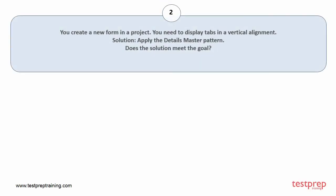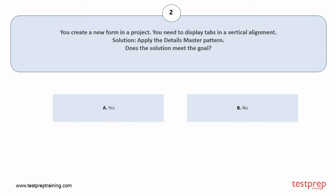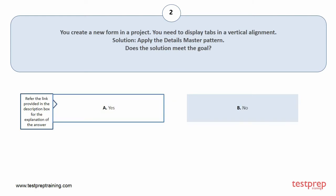Question number 2. You create a new form in a project. You need to display tabs in a vertical alignment. Solution: Apply the details master pattern. Does the solution meet the goal? Your options are: A. Yes. B. No. The correct answer is option A.